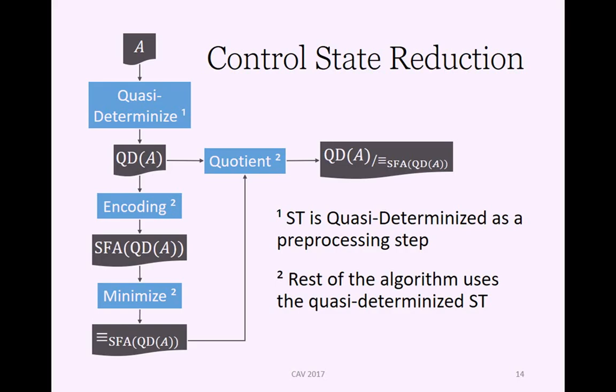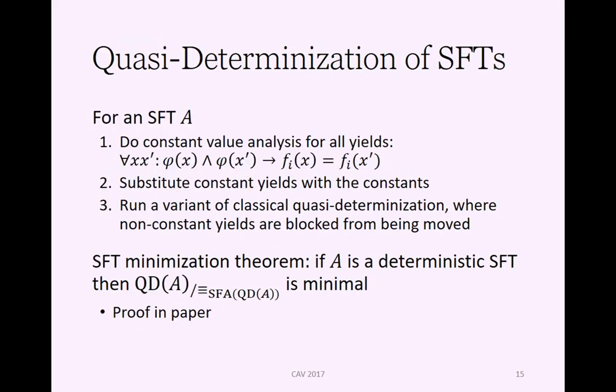The way this works in the algorithm is that this is just used as a preprocessing step here at the start, and the rest of the algorithm just uses the quasi-determinized symbolic transducer for its operation. In this special case of symbolic finite transducers, what we do is that we do constant value analysis for all of the yields in the transducer. Namely we check that for every yield, does this yield only have one value it can have given the context of the guard of its transition.